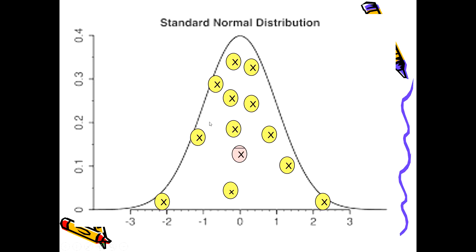The values observed from different people in the sample are represented by x. When we take the mean of all these values, it is represented by x-bar. In a normal distribution curve, the mean, median, and mode lie in the center and are always equal to zero. The mean is calculated by summing all observations and dividing by the total number of observations.